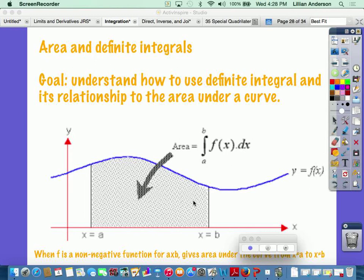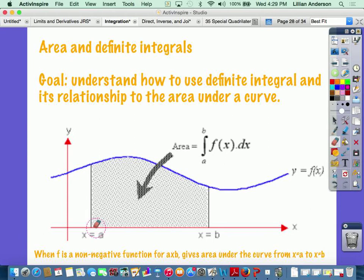So what you see below is a curve, f of x, and it's basically being integrated from a lower bound of a to an upper bound of b. And basically what that represents is the area underneath the curve from a to b.